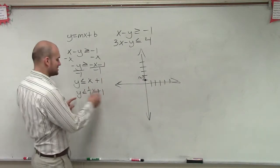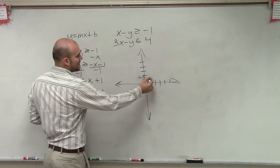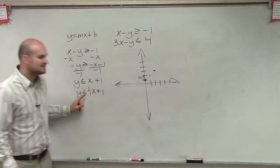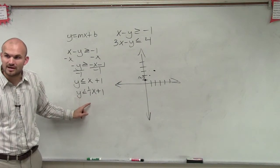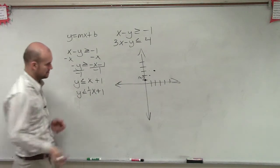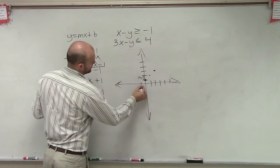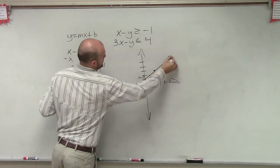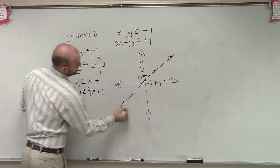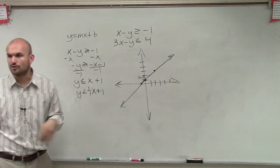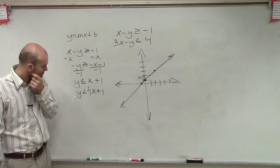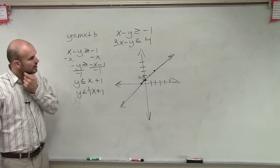Then the slope tells us to go up 1 to the right 1, up 1 to the right 1. And I look at the sign, and since it's less than or equal to, that tells me it's going to be a solid line. Let's go up 1 to the right 1 or down 1 to the left 1. OK, we graphed that one.